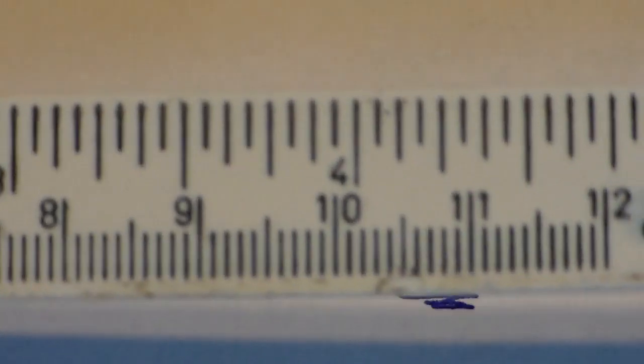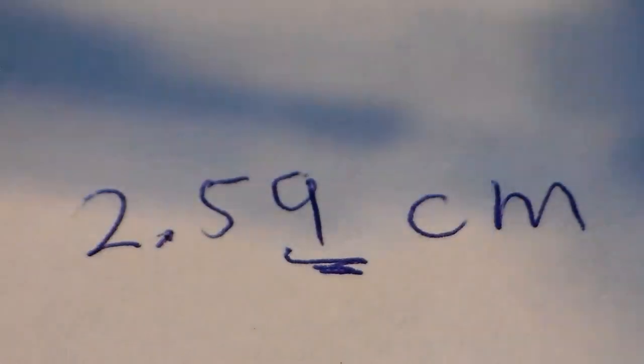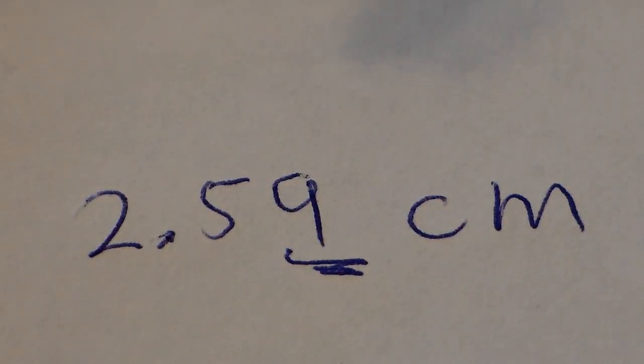So when it comes to the measurement of the diameter of that spool that we're looking at. Okay, I measured 2.59 centimeters and I got centimeters because the measurement at the bottom there is centimeters. Okay. Now let's do a different example so we can make sure that we get a good feel for how this all works.